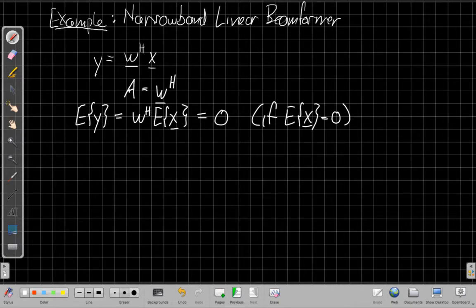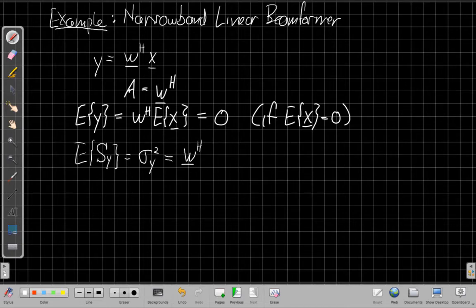And what about for the second moment? We want to say, well, what's the expected value? We could say capital S of Y, but because Y is a scalar, that's also equivalent to saying what's the variance of the complex number output, this complex random variable. What's its variance? We get that will be W Hermitian times the covariance matrix of the input times W.